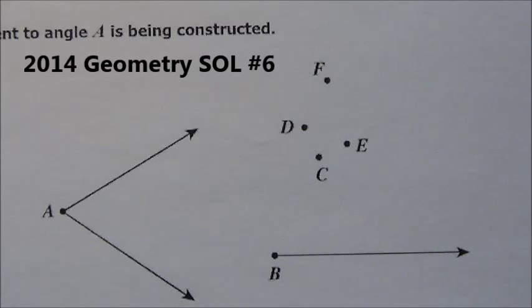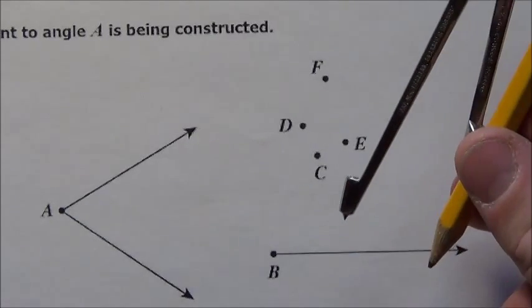Here's problem number six. It says which ray could be drawn to construct an angle congruent to angle A? So we have to use our compass here.